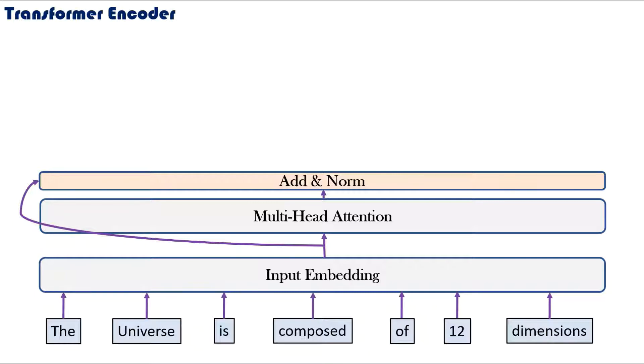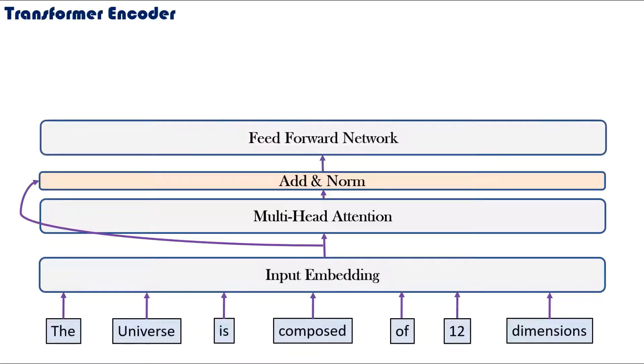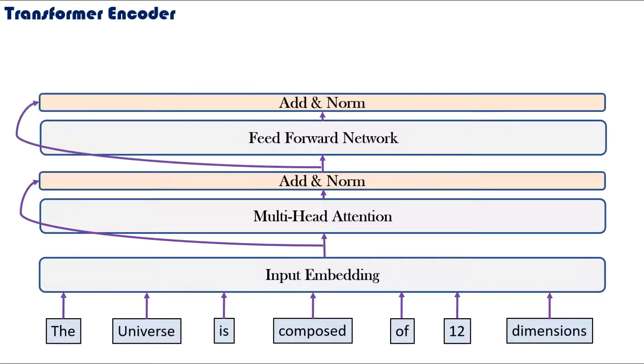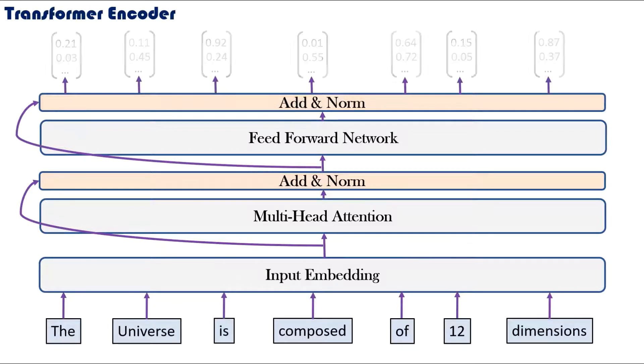Then the combined result is passed to a typical feed-forward network, which is followed by another residual connection. The final outputs are a series of vector representations for each of the input words.